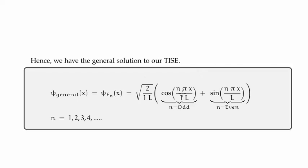I'm being a bit pedantic by including the 1 here, and I see that I have a typo — this also should read 1. We know that it's alternately either a cosine or a sine solution because the principal quantum number n is alternately even or odd, and will kill the opposite solution.